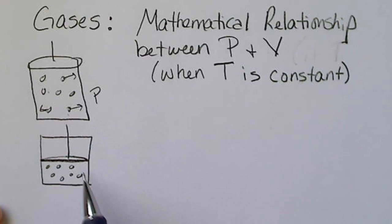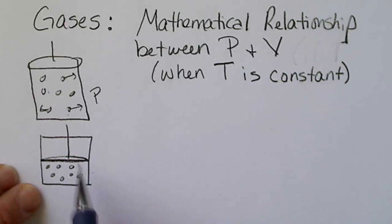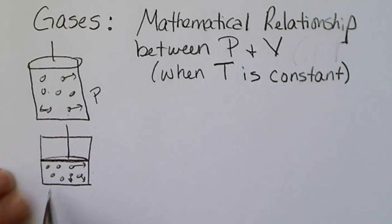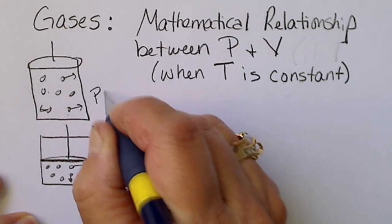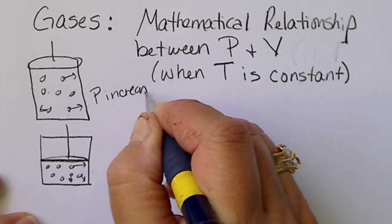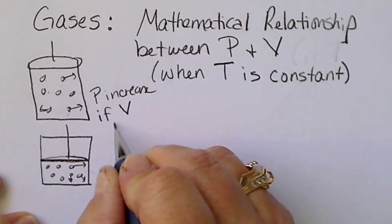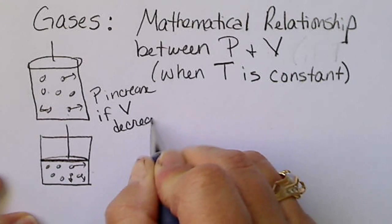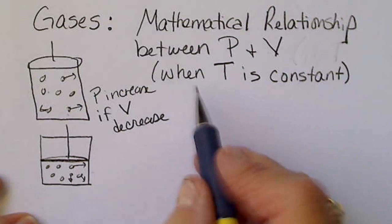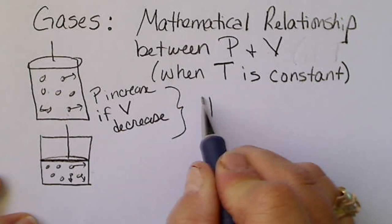So if we reduce the volume of a gas, for example by sitting on a balloon, if we decrease the volume of the gas, the pressure is going to increase. In a smaller container, those gas particles are going to be hitting the side of the container more often. We could have a pressure increase if there's a volume decrease, and that is referred to as Boyle's Law.